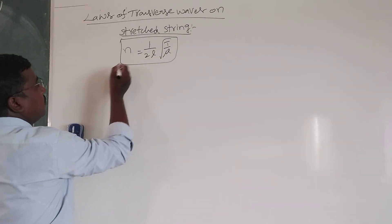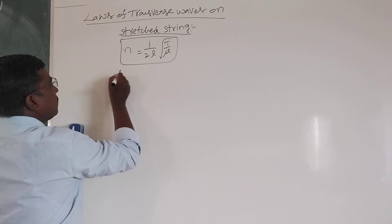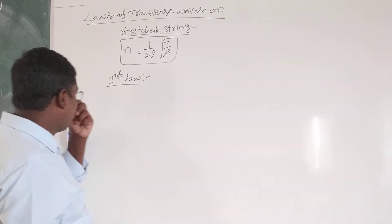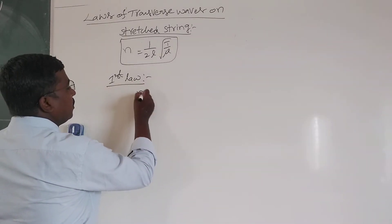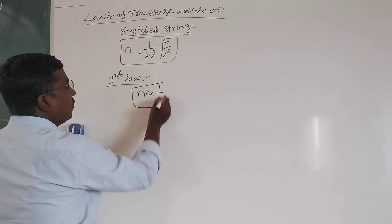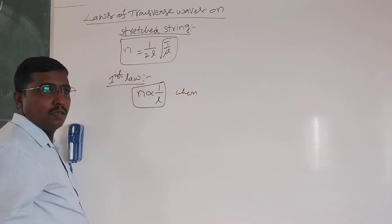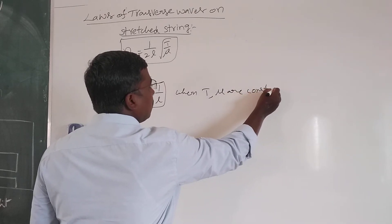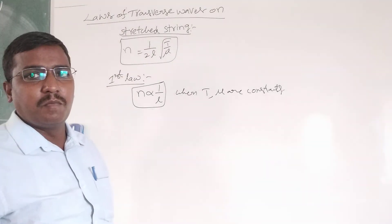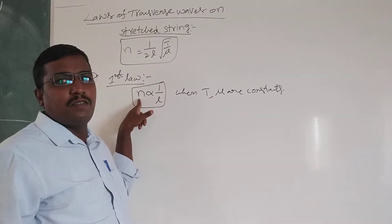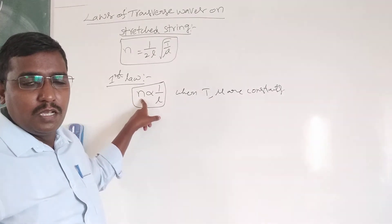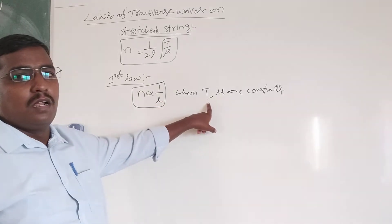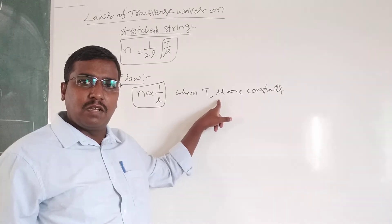Based on this, there are three laws of the stretched string. The first law states that N is inversely proportional to 1 by L, when tension T and linear mass density mu are constants. That is, the fundamental frequency of a given wave is inversely proportional to its length, when the tension and the linear mass density of the string remain constant.